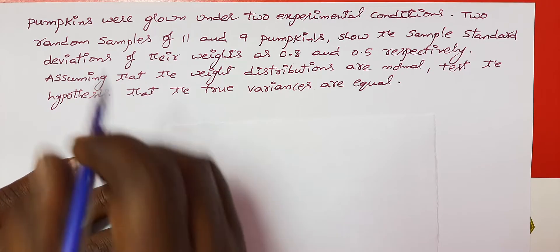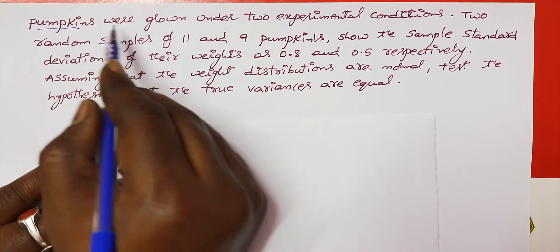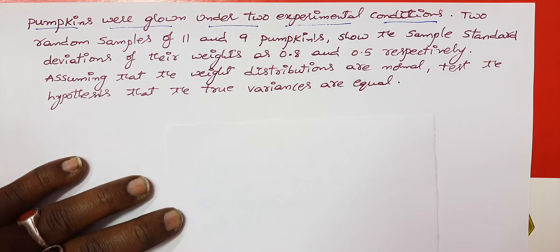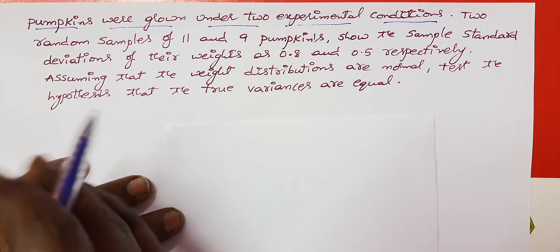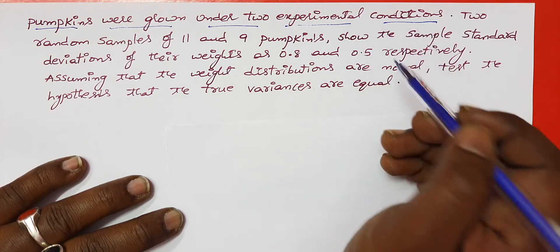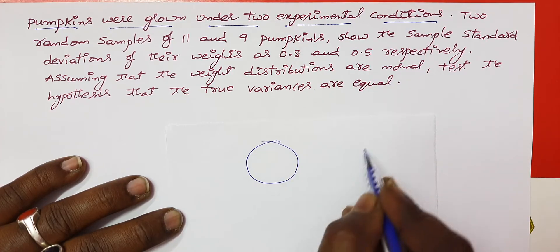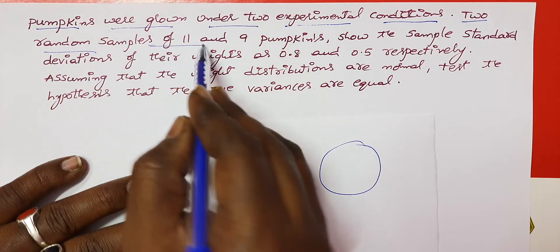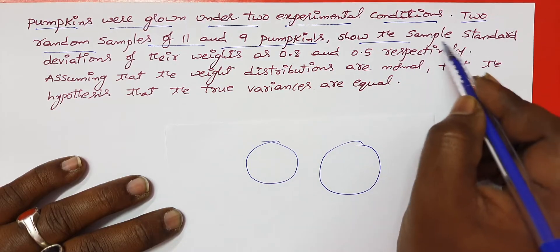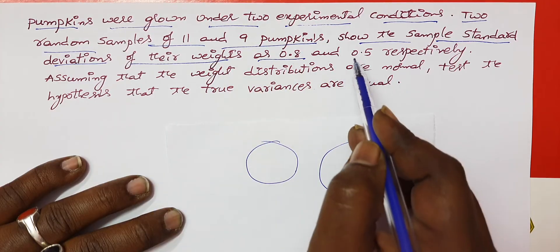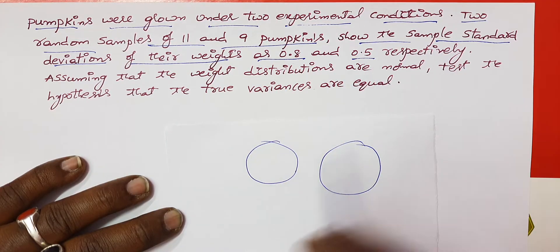See the statement of the problem. Pumpkins were grown under two experimental conditions. Here you can see the pumpkins under two different conditions — two populations. Two random samples of 11 and 9 pumpkins show the sample standard deviation of their weights as 0.8 and 0.5 respectively.